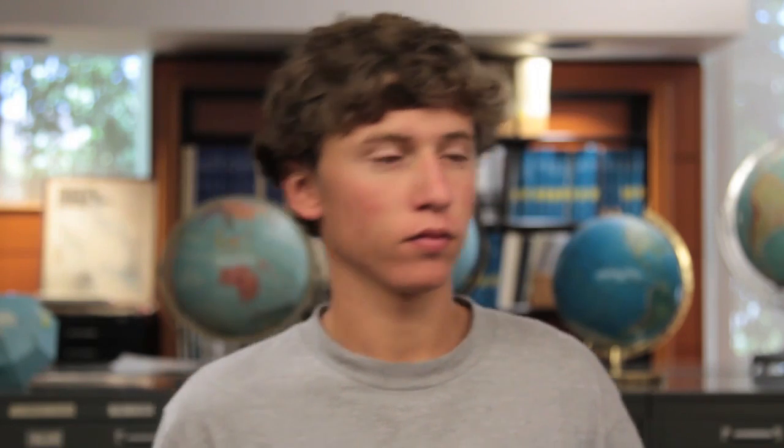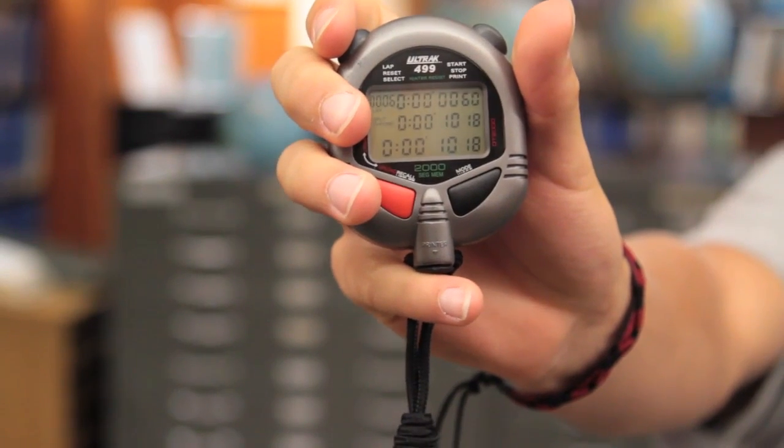Matt will now be reading out the cumulative times to Colin, who will record these times on the computer. 1.37, 2.84, 4.52, 6.18, 7.84, 9.58, 10.18.